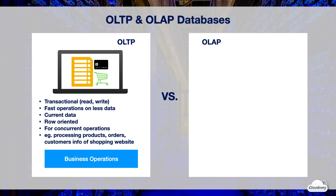For example, you have an online shopping website. You can use an OLTP database to store products, orders, and customer information. Operations like adding new products, updating customer information, and processing orders are online transactional processes. These operations are performed frequently on a small amount of data.